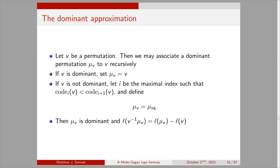We can associate to any permutation v a dominant permutation — which the referee suggests I call the dominant approximation — written mu_v. We define it recursively: if v is dominant, set mu_v equal to v. If v is not dominant, let i be the maximal index such that code_i(v) is less than code_{i+1}(v), and then define mu_v equals mu(v s_i). This recursion terminates in a dominant permutation mu_v such that L(v^{-1} mu_v) equals L(mu_v) minus L(v).